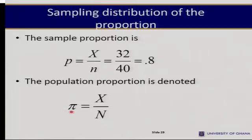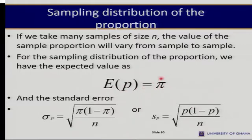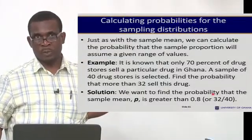We also have the population proportion denoted pi, equal to the number in the population with that characteristic divided by the population size. Just as with the mean, the sampling distribution of the proportion is described by its expected value and standard error. The expected value of the sample proportion equals the population proportion pi. The standard error is obtained by the formula: square root of pi times (1 minus pi) over n. Where pi is unknown, the sample proportion is used instead.